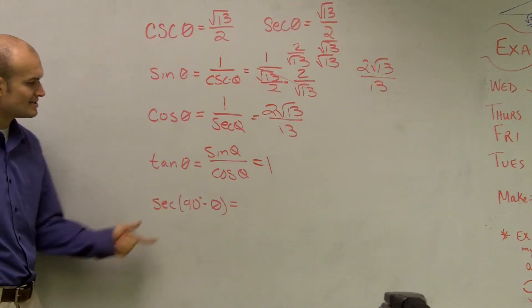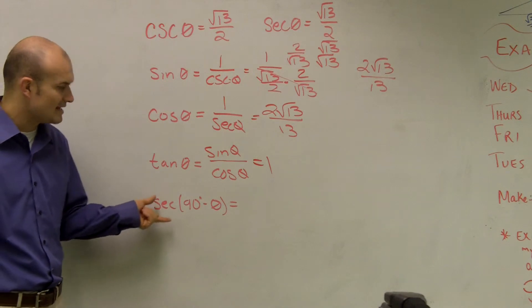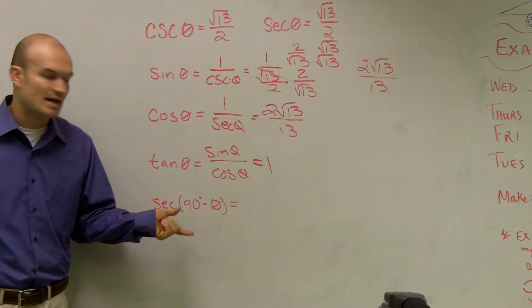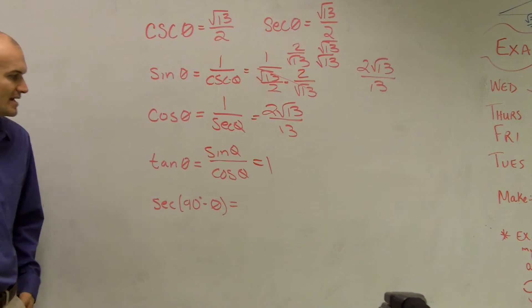And the last thing we need to know is, this is below your blue box, it's saying the co-function complementary angles. If you're given secant of 90 degrees minus theta, that's the same thing as cosecant of theta.